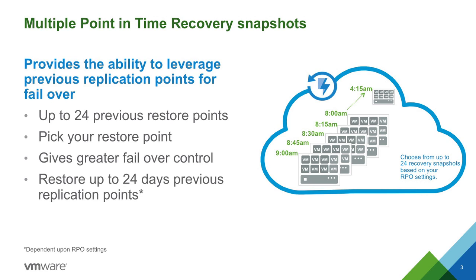Multi-point-in-time recovery allows you to recover back to 24 previous replication points in time. For example, if you've set a 15-minute recovery point objective and you start replication at 10 a.m., every 15 minutes a replication cycle is kicked off and only data changes or deltas are retained. In the event of a failover, you can pick a specific time to recover a VM from. If your data center has an issue and you need to fail over at 11 a.m. and the latest copy contains errors, you can choose to recover using a copy taken at 10:15 a.m. instead. This allows you to successfully recover in the event of data corruption.